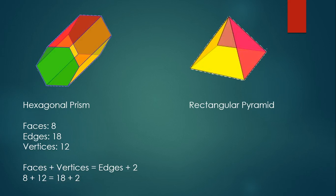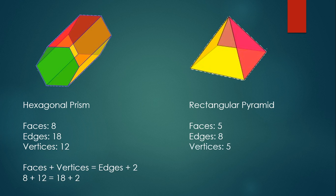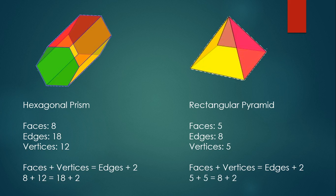How about this rectangular pyramid? It has 5 faces, 8 edges, and 5 vertices. So the faces plus vertices is 5 plus 5, and the edges plus 2 is 8 plus 2. 10 does equal 10, so once again we can see that Euler's Theorem is verified.